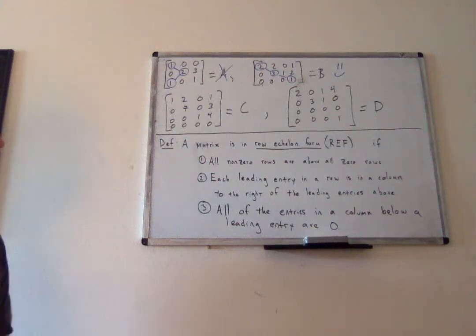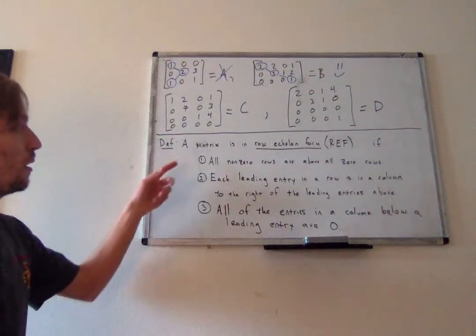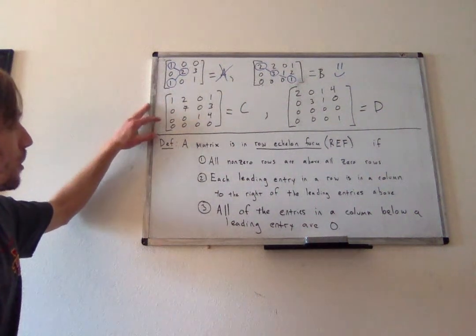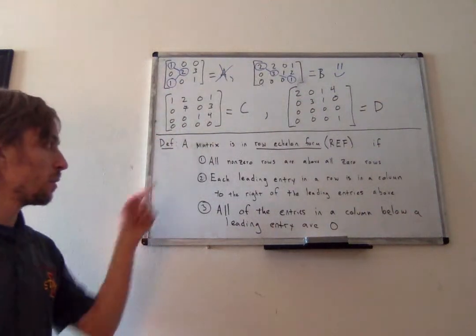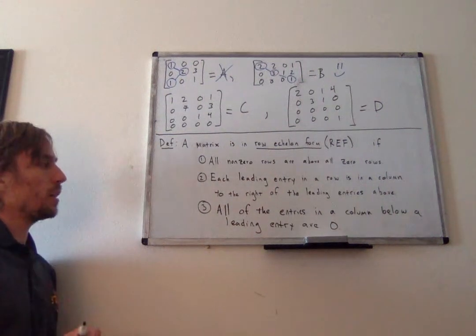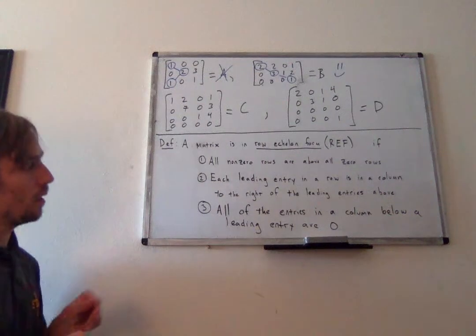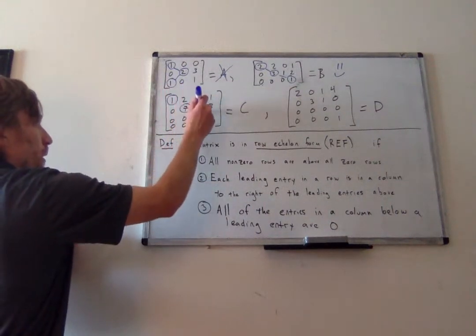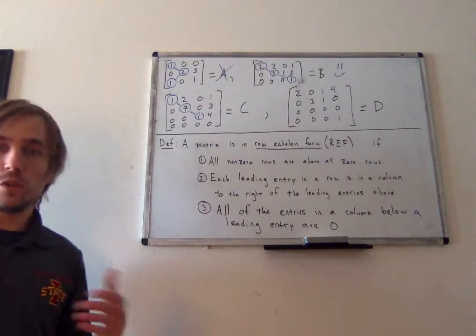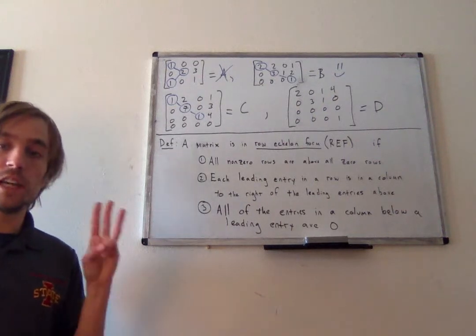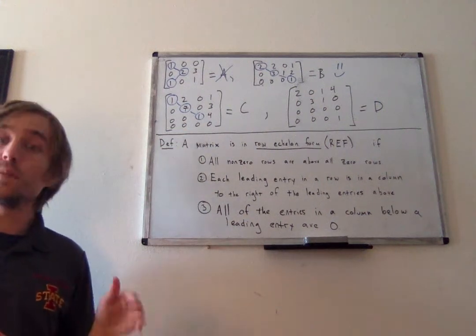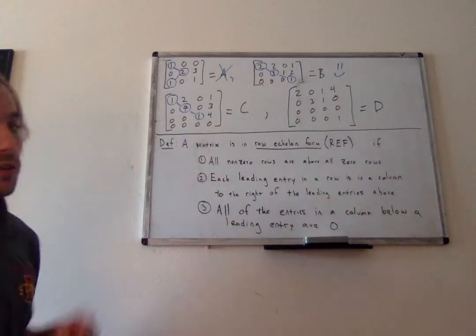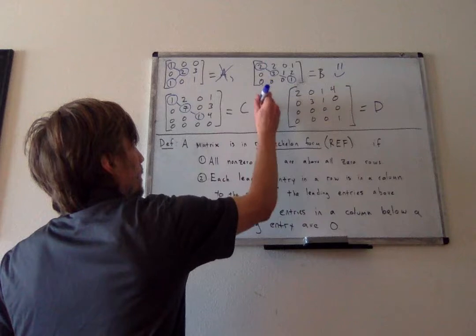Now C does have a zero row, and we want to make sure it is at the bottom of the matrix. And notice it is — I have one zero row and it's at the bottom, so property one is satisfied. Circling all of the leading entries — one there, one there, one there — the zero row doesn't have a leading entry. The lines are always moving to the right, so property two is satisfied. Each leading entry looks down and sees zeros. So C is in row echelon form.